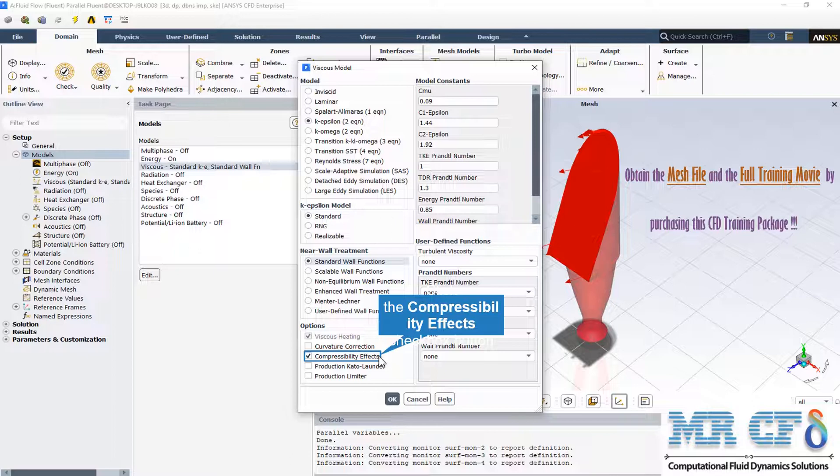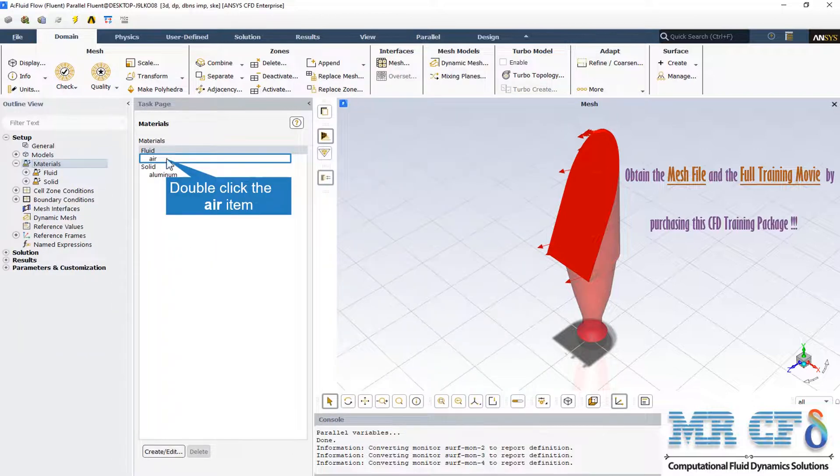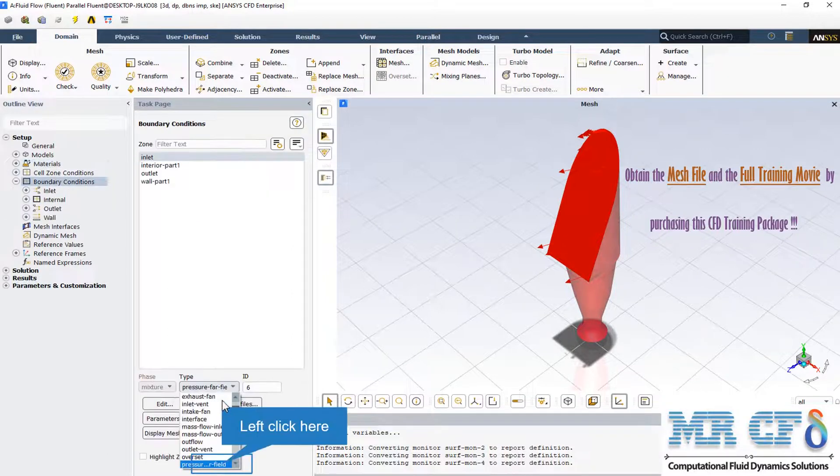The identified fluid material is air and aluminum has been specified for the solid material and the walls of the convergent-divergent nozzle.